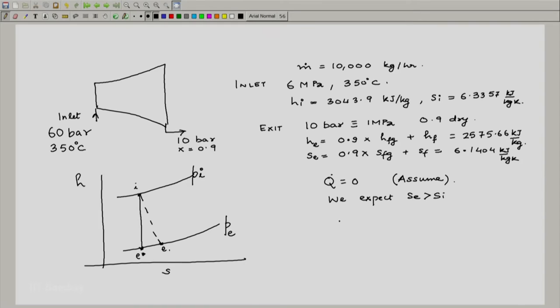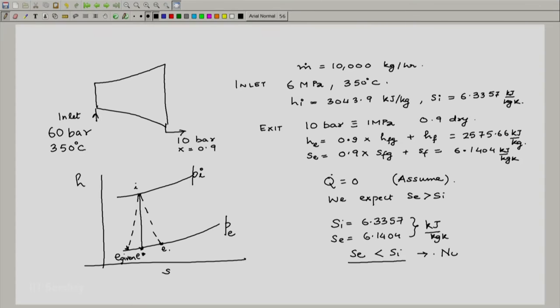But what do we notice? We notice that s i is 6.3357 and s e is 6.1404 both kilojoule per kg Kelvin, and s e is actually less than s i, which means that we are expecting that the process would go in this fashion and this is e given. This is just not possible because we have assumed q dot is equal to 0, which would have meant that s e should have been greater than s i.